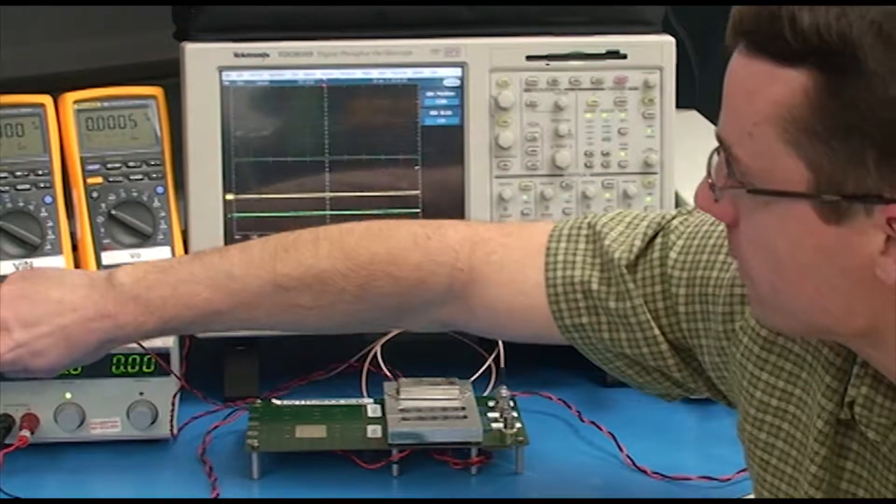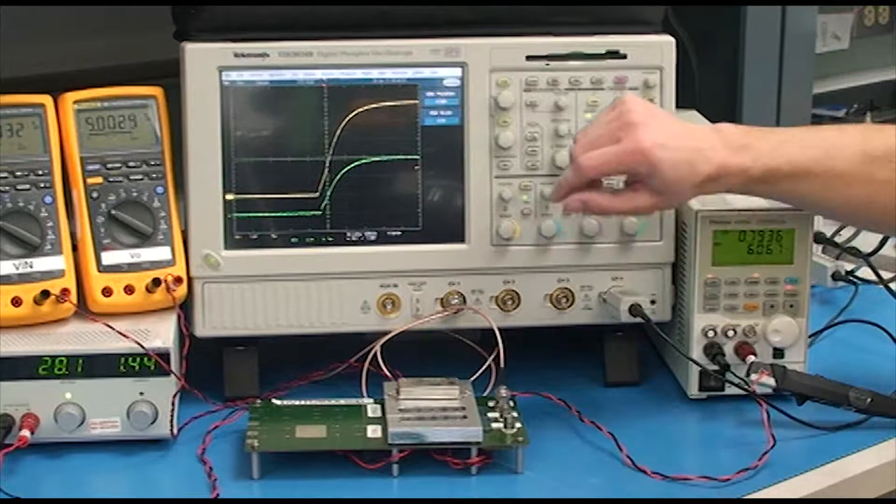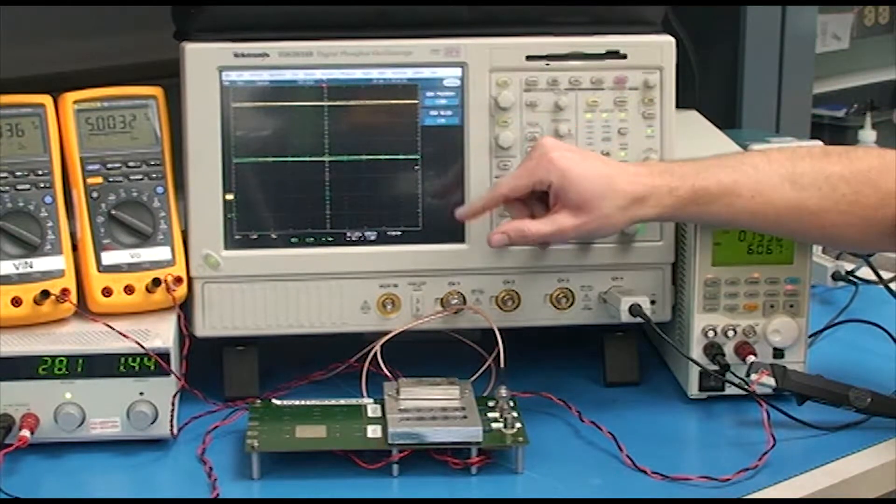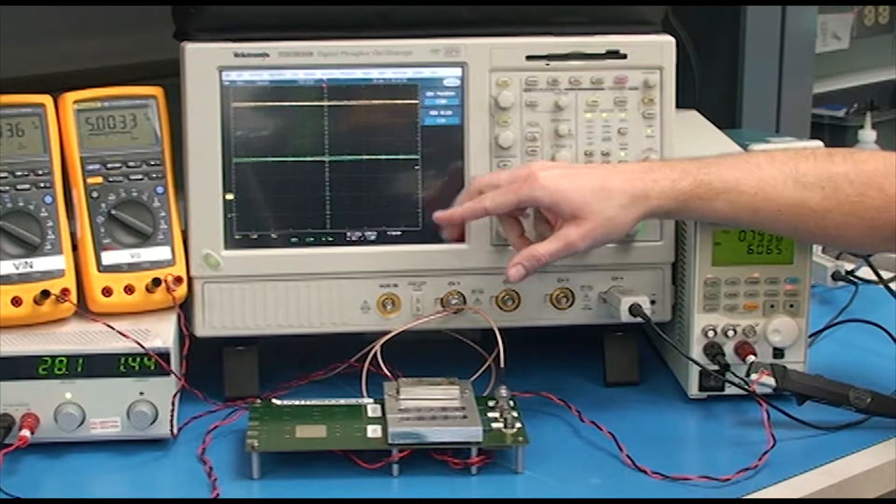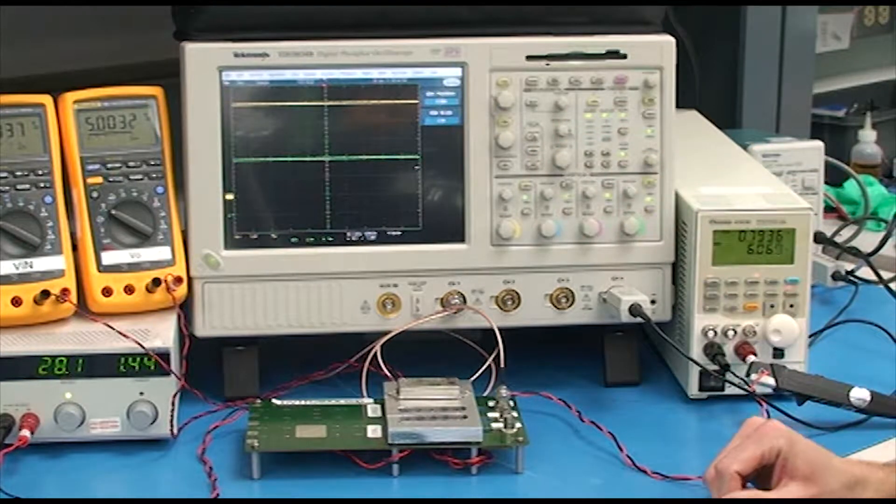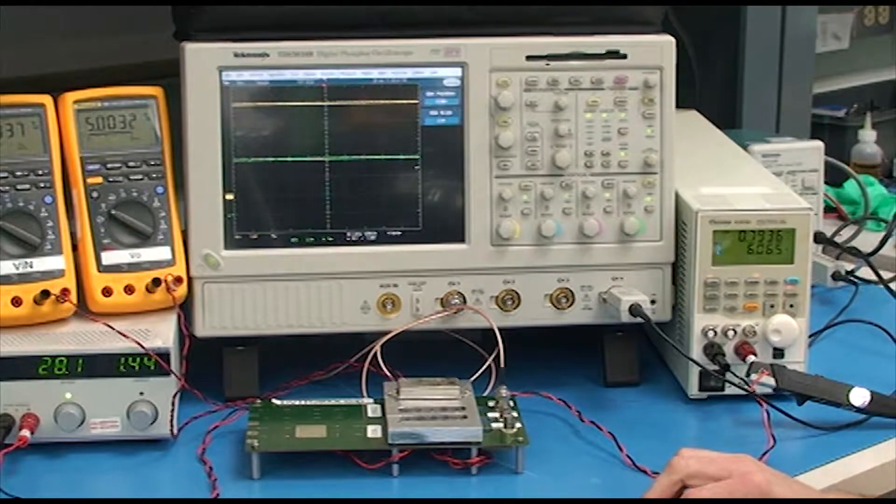So, as I turn this on, V out comes up to 5 volts. The output current here is running at full load which is 6 amps for this product.